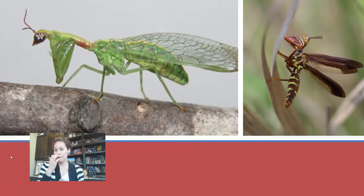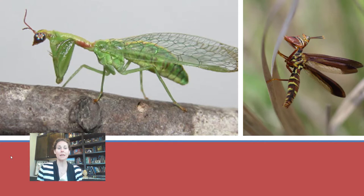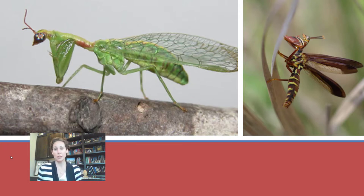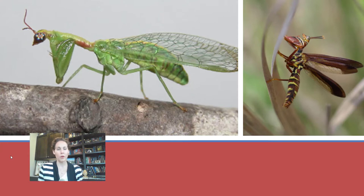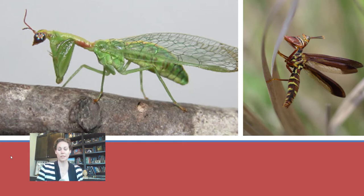One of my favorite neuropterans is the mantispid or mantis fly. It looks very similar to a praying mantis but is not — it has lacy wings, is much smaller, and the coloration is different, almost looking like a wasp-praying mantis hybrid. Their raptorial legs are different from a praying mantis: different in shape and location on the body — higher up near the head — versus a praying mantis where they're closer to the second set of legs.